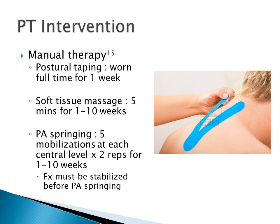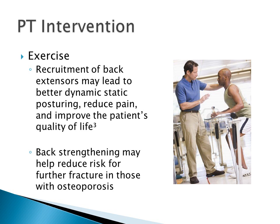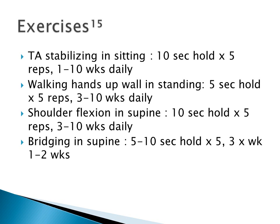Bennell et al. suggested a multimodal PT intervention which includes manual therapy and exercise. For manual therapy, they used postural taping, soft tissue massage, and PA springing. Note, however, that fractures must be stabilized before you conduct PA springing. For exercise, you want recruitment of back extensors, which may lead to better dynamic and static posturing, reduce pain, and improve the patient's quality of life. Back strengthening may also help reduce risks for further fracture in those with osteoporosis. The next two slides include a couple of examples that Bennell et al. used in their study.